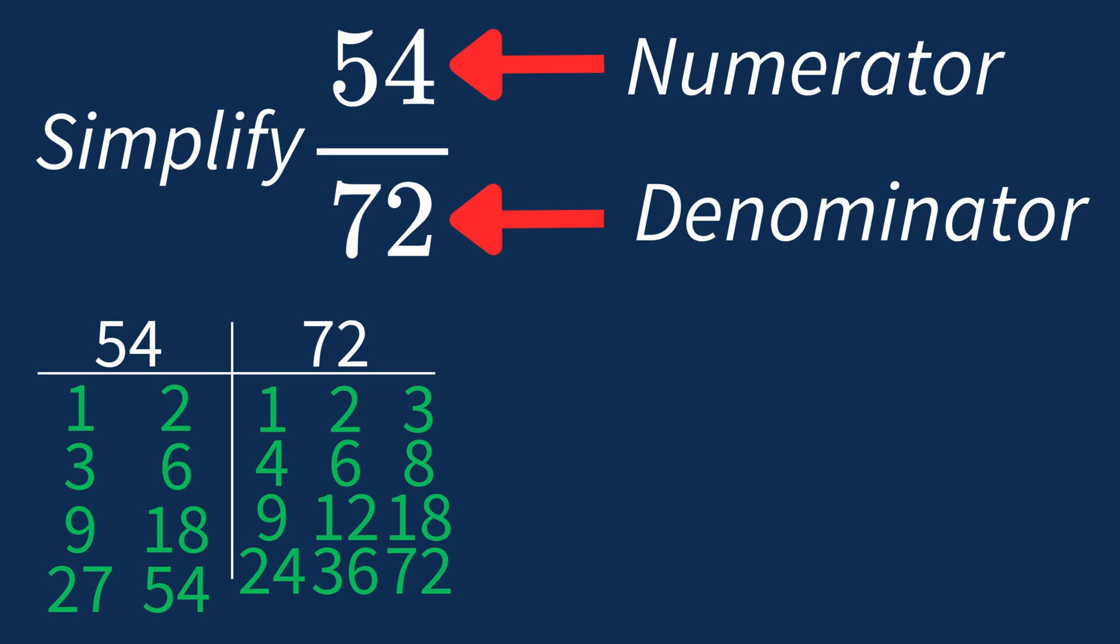So the largest common factor between 54 and 72 is 18. This means we can divide both the numerator and denominator by 18 to simplify the fraction.